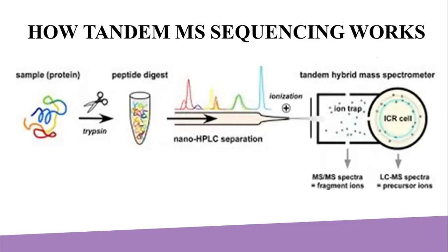Tandem mass spectrometry sequencing works by using two mass analyzers in series with a collision cell in between. The collision cell is a region where ions collide with gas—mainly noble gases such as helium, neon, and argon—resulting in fragmentation. Fragmentation of the peptide occurs in a predictable fashion, mainly at the peptide bonds. The resulting daughter ions have masses consistent with the molecular weights of dipeptides, tripeptides, tetrapeptides, and so on.